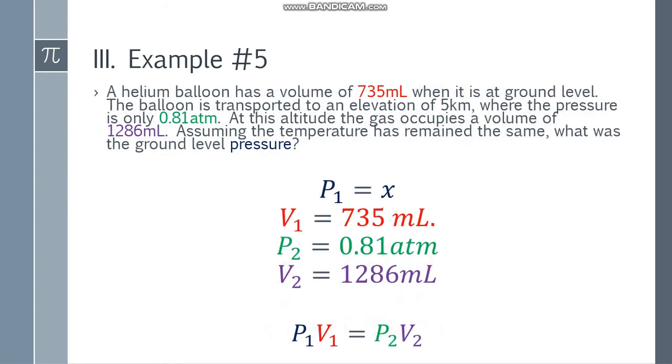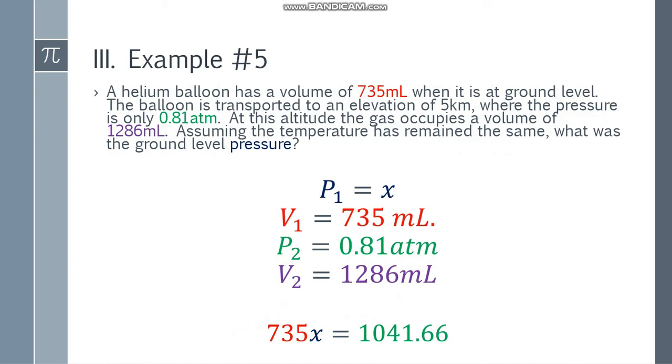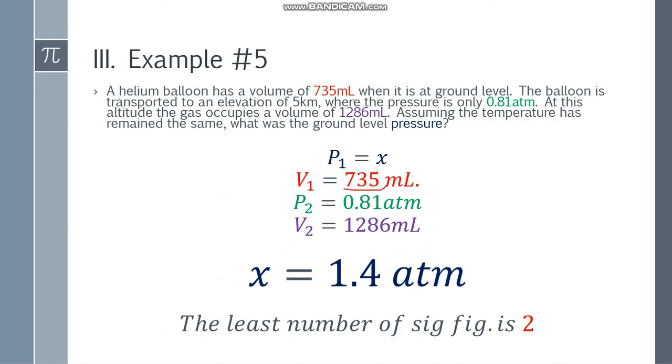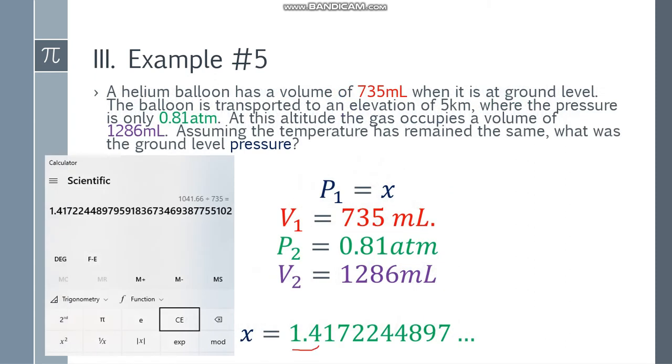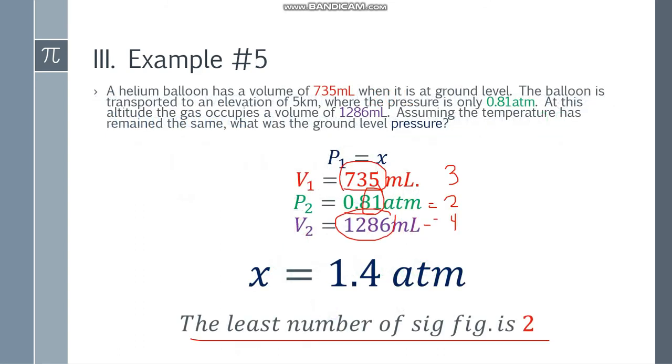P2 or resulting pressure will be 0.81 atm, and V2 is 1286 ml. Since we're complete, let's have the formula: P1V1 is equal to P2V2. X times 735 equals 0.81 times 1286. Simplify: 735X equals 1041.66. Divide both sides by 735, and X is 1.41722 and so on. Check significant figures: 735 has three, 0.81 has two, and 1286 has four. The least is 2, so the final answer is 1.4 atm.